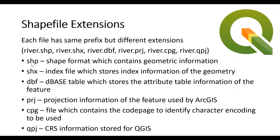The .shp extension is the basic extension, called the shapefile format. This file contains the geometric information of the feature. Next, the .shx is the index file, which stores the index information of the geometry of the feature.